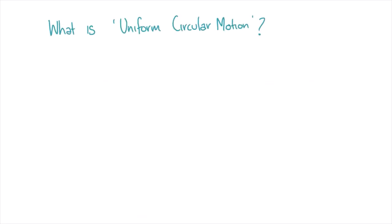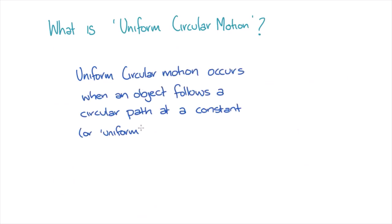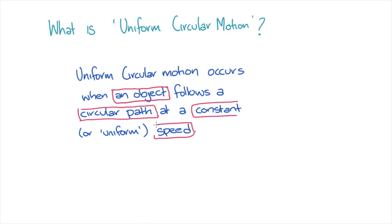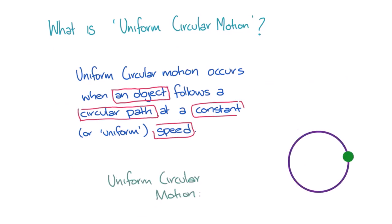Firstly, we'll define what exactly uniform circular motion is, then we'll move on to real-life examples of objects undergoing uniform circular motion, and finally, we'll derive the velocity of an object that's undergoing uniform circular motion. So what is uniform circular motion? Well, it occurs when an object follows a circular path at a constant, or uniform, speed. You can see in the graphic an object that is following a circular path at a constant speed, and is therefore undergoing uniform circular motion.